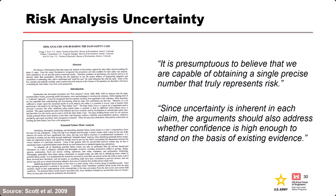A paper by Greg Scott, Nate Thorntland, and Carl Dice contains two relevant quotes. First: 'It is presumptuous to believe that we are capable of obtaining a single precise number that truly represents risk.' Second: 'Since uncertainty is inherent in each claim, the argument should also address whether confidence is trying to stand on the basis of existing evidence.' The risk estimate is supposed to be an accurate representation of our degree of belief, but we need to be humble enough to understand our limitations and admit what we don't know.